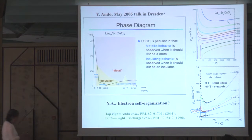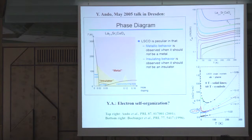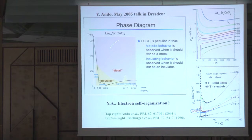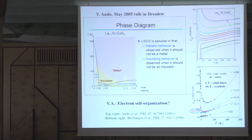Many speakers, starting from the very first talk of this conference, have discussed the bad metal behavior in cuprates. Rather than make my own slide, I took a slide from Yoichi Ando's talk from more than ten years ago, which summarized these behaviors. One of the key points is that metallic behavior at very high temperatures emerges already with the first added holes — it is seen already at 1% doping.